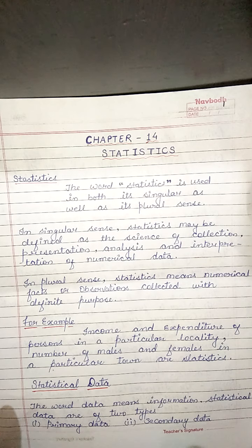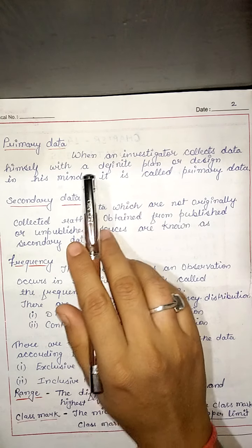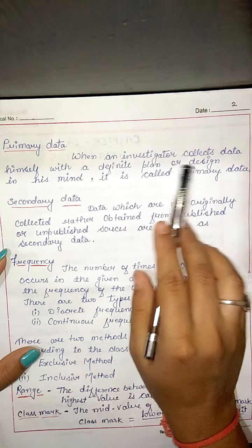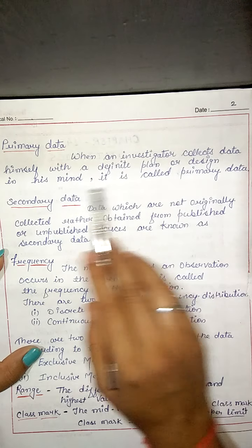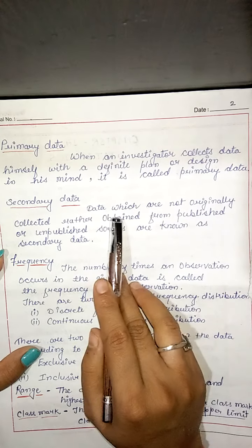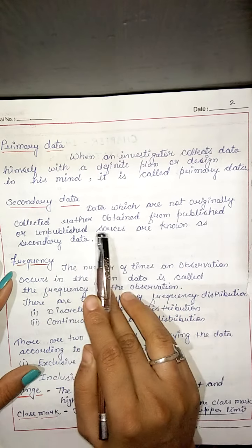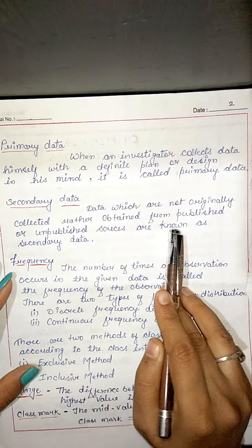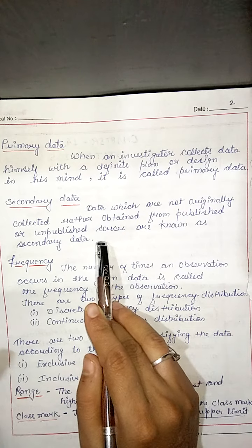Statistical data are of two types. First is primary data and second is secondary data. Primary data is when an investigator collects the data himself with a definite plan or design in his mind — it is called primary data. Secondary data: the data which are not originally collected but rather obtained from published or unpublished sources are known as secondary data.